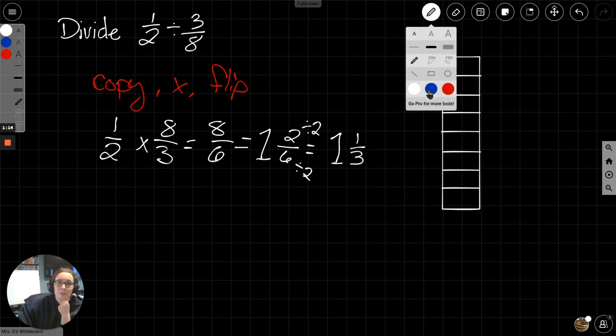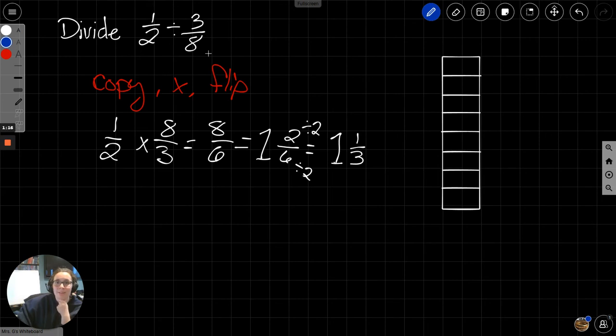Let's look at this on the model. We have 1 half divided by 3 eighths. 1 half is equal to 4 eighths. I have to have a common denominator if I'm going to use my model.